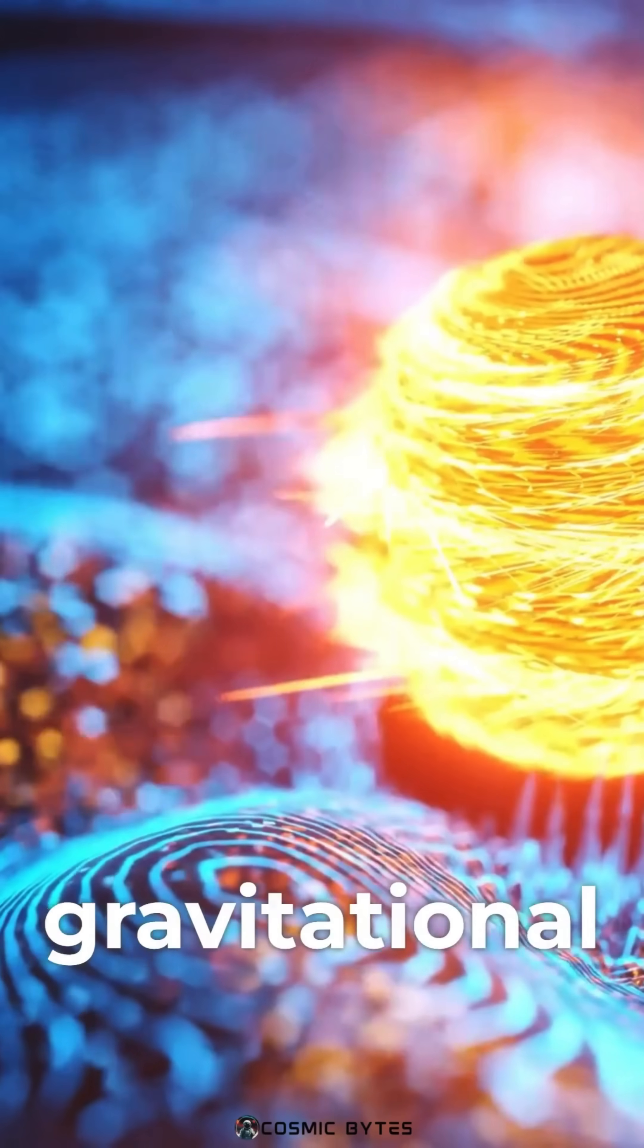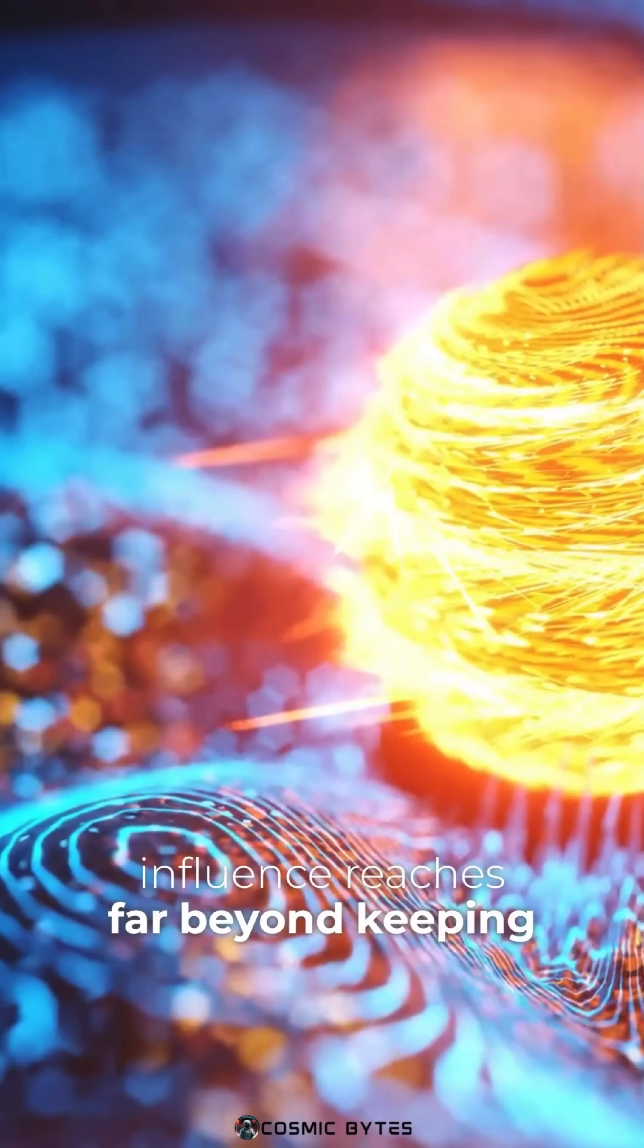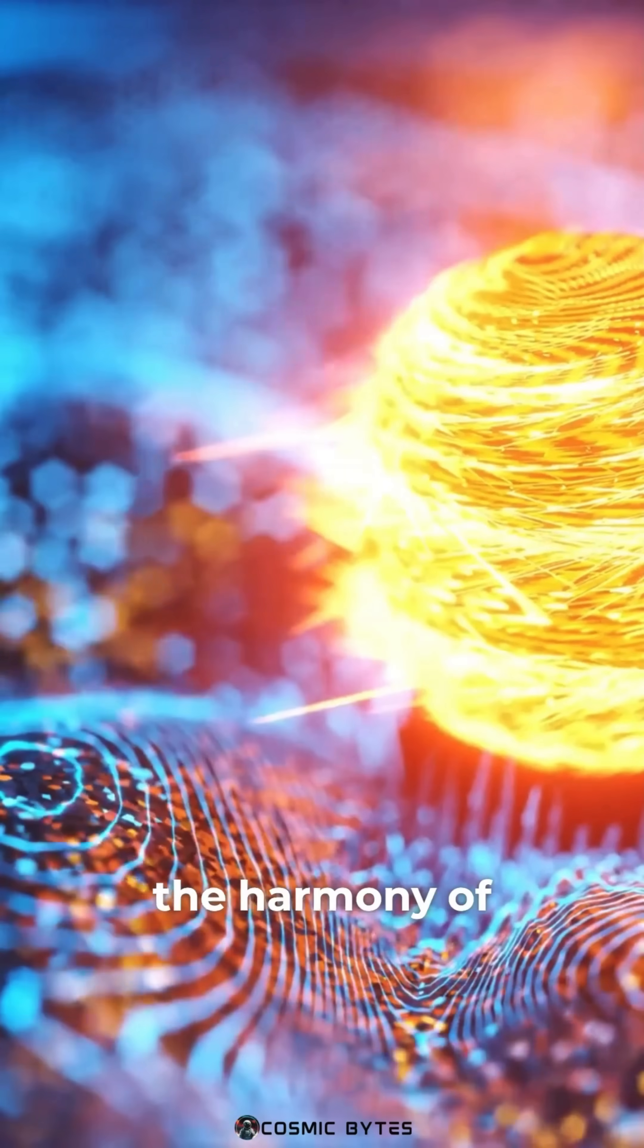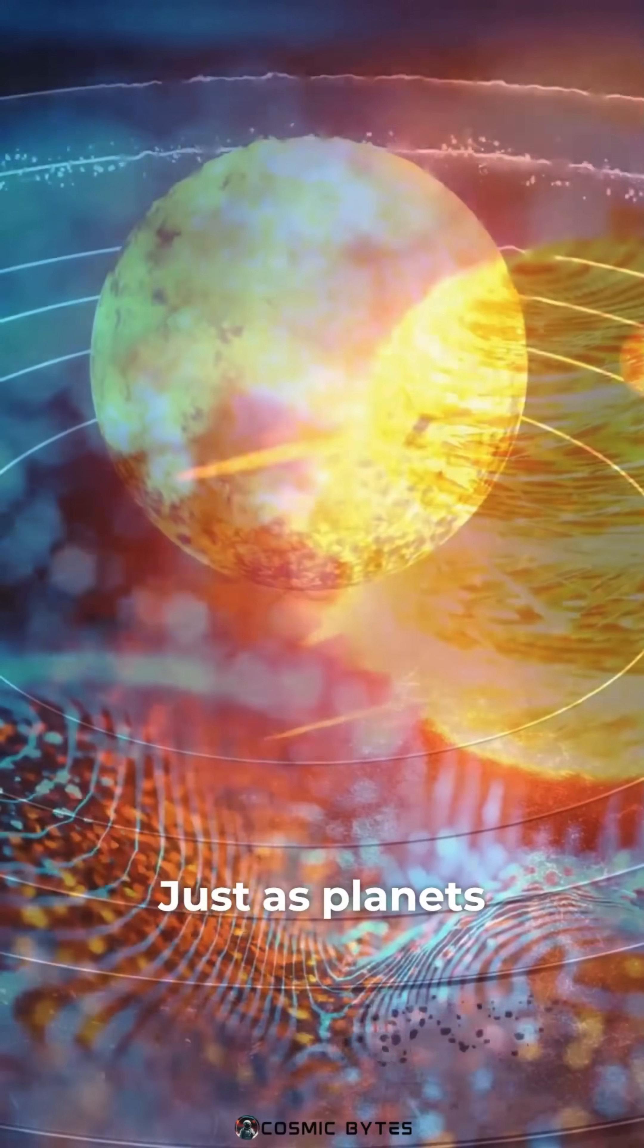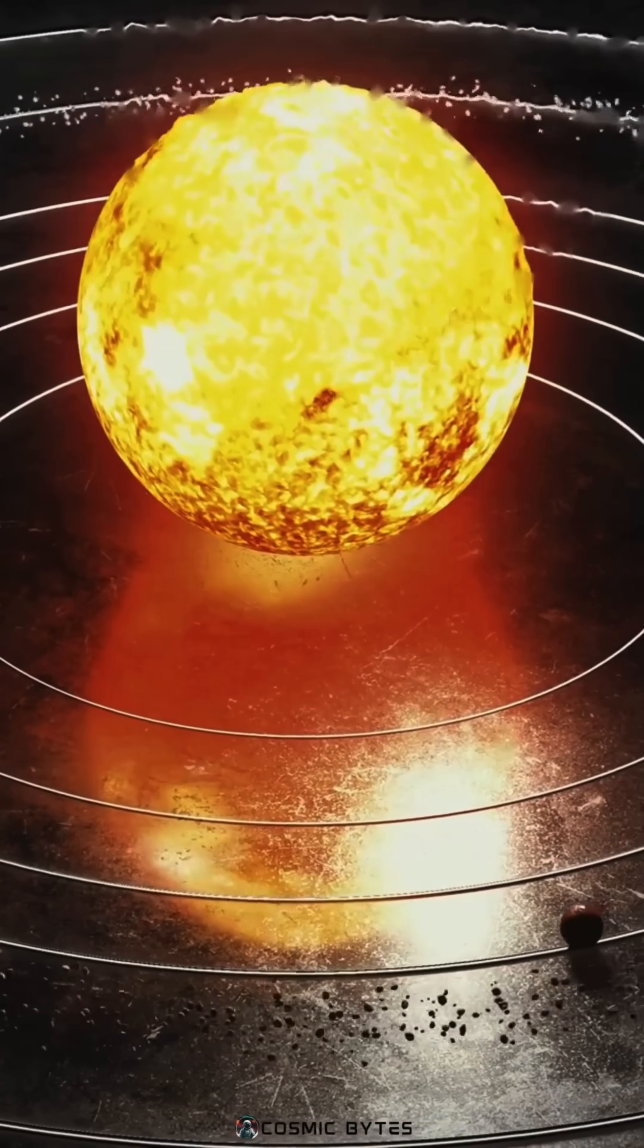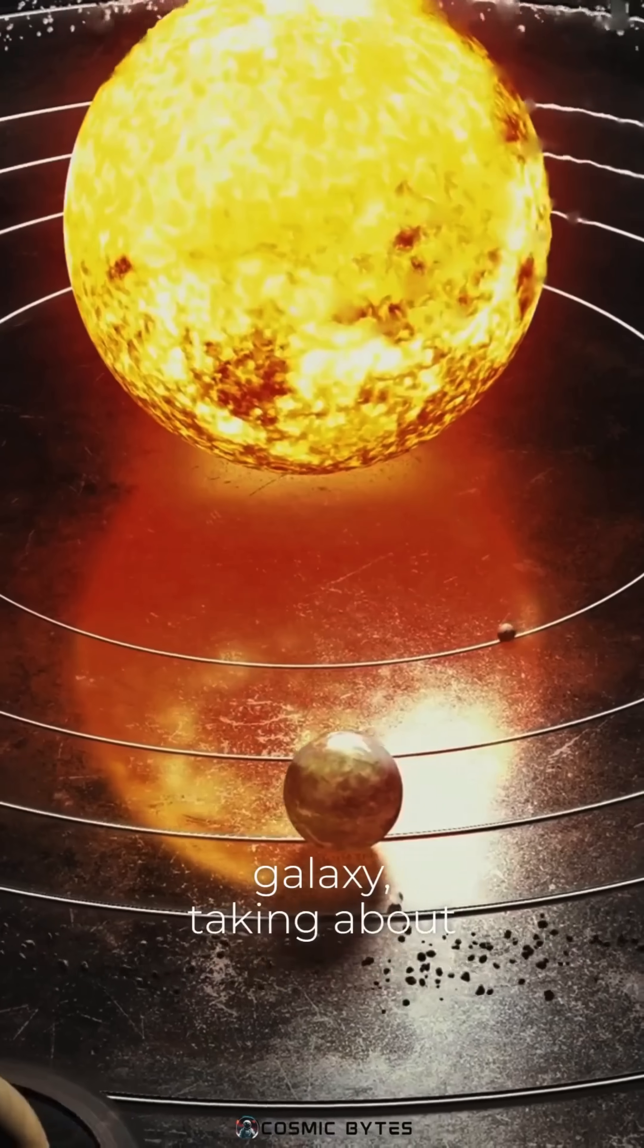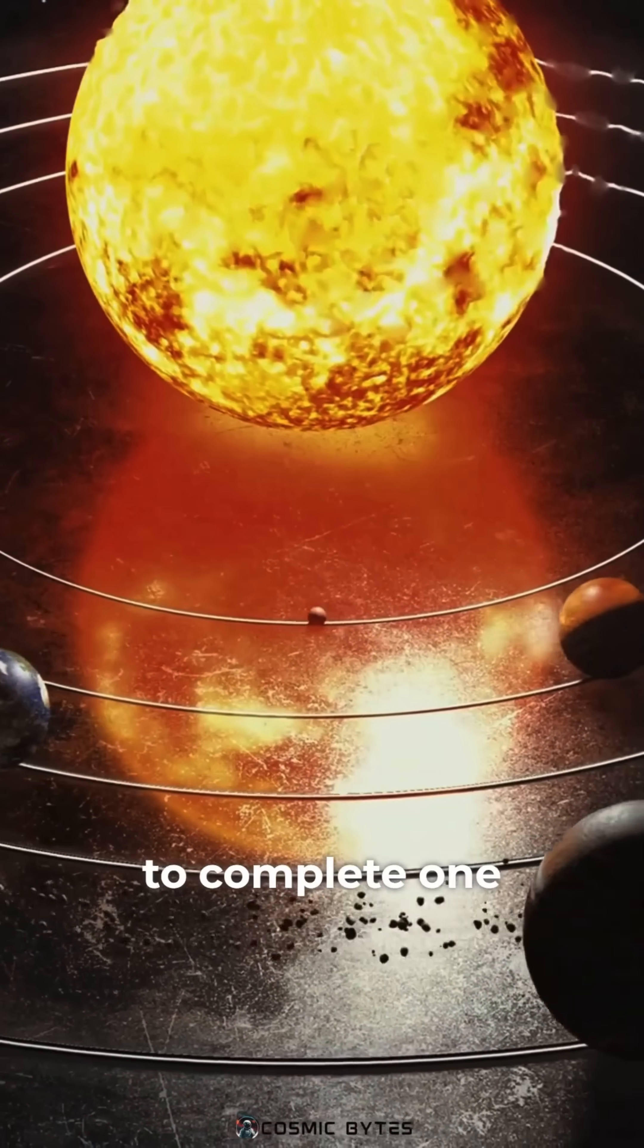The Sun's gravitational influence reaches far beyond keeping planets in orbit. It also plays a crucial role in maintaining the harmony of our cosmic neighborhood. Just as planets circle the Sun, the Sun itself orbits around the center of the Milky Way galaxy, taking about 230 million years to complete one revolution.